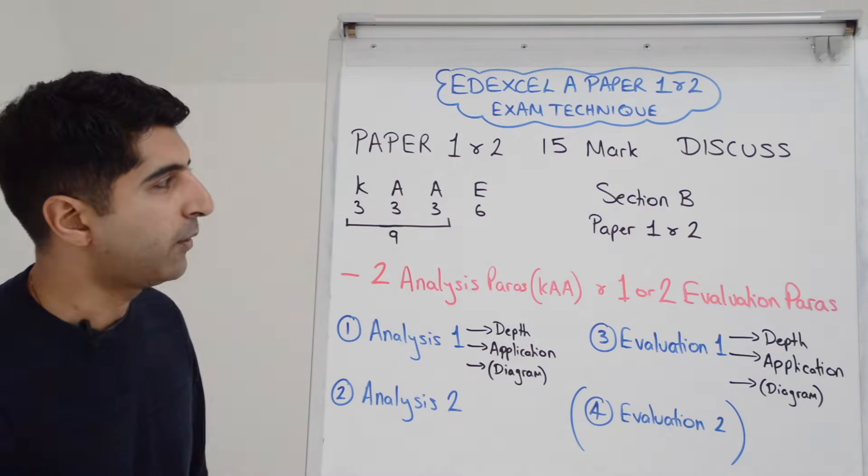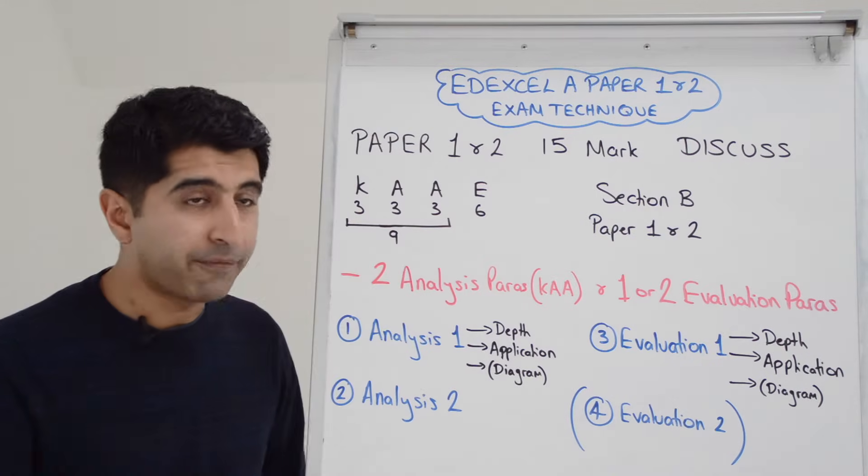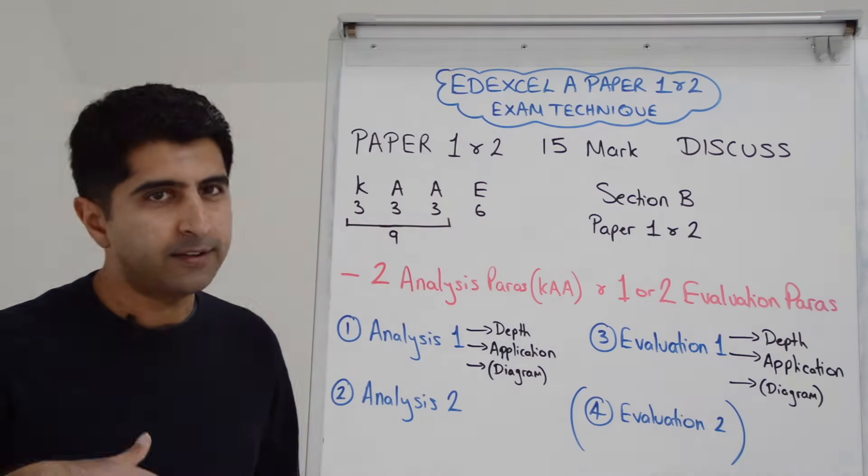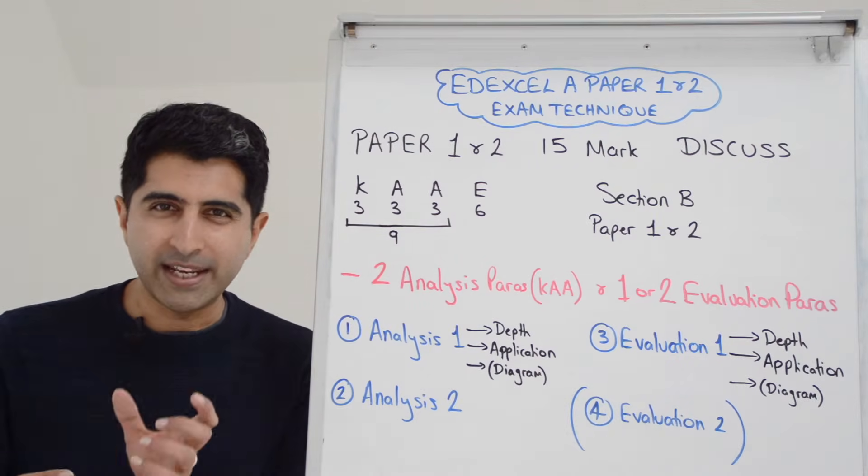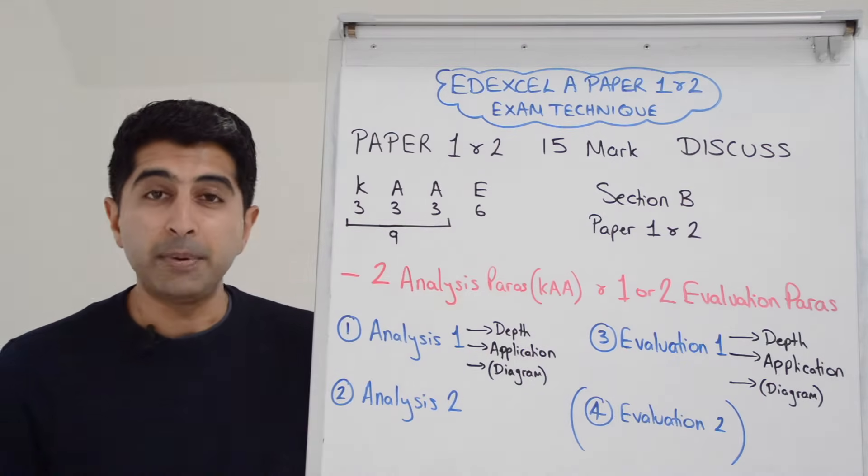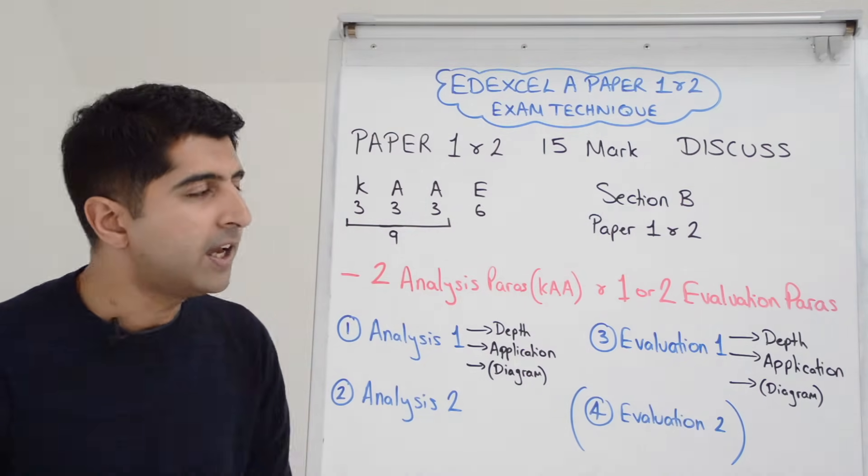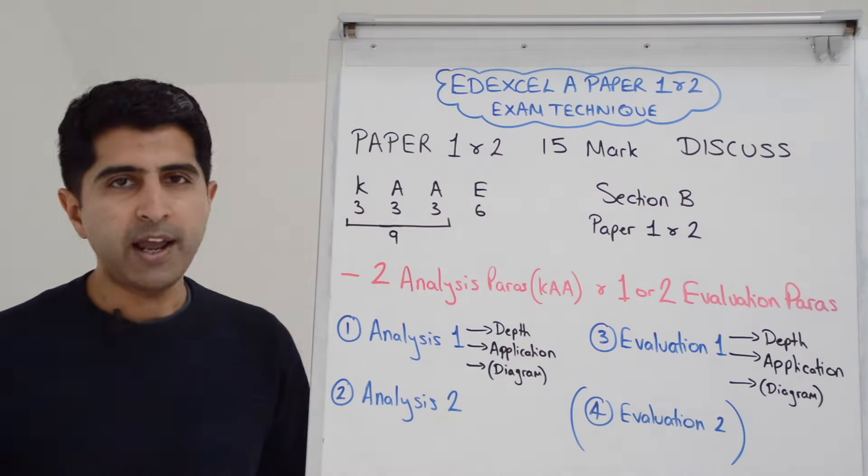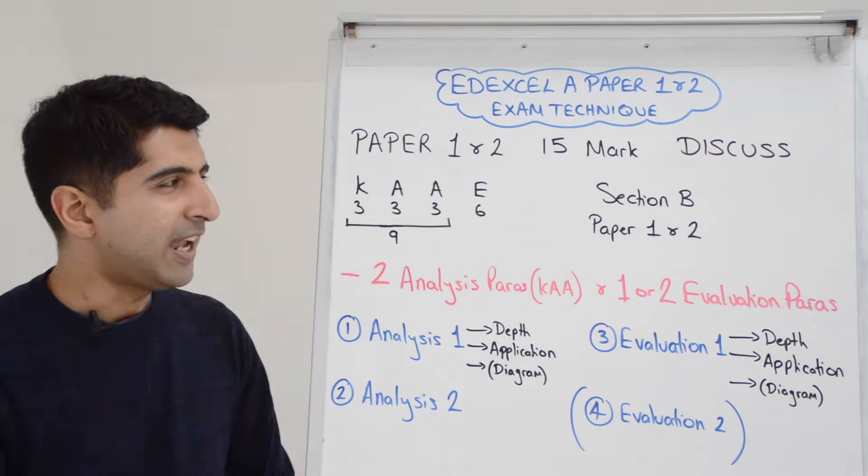So even more credit for evaluation, again marked in levels. Both analysis and evaluation depth is required to hit the highest levels. And we know this is section B, paper one and paper two only. You're going to get a 15 marker right at the end, the last question in section B.